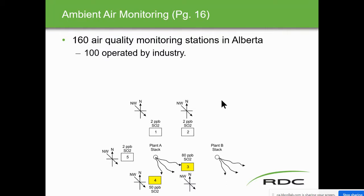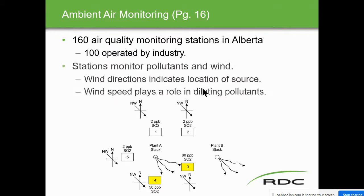100 of those stations are operated by industry, and 60 are monitored by the government. Station monitors measure pollutants and wind. Any of these stations, wherever they're put, monitor the pollutants and the wind. Wind direction indicates location of source. Wind speed plays a role in diluting the pollutants — the higher the winds, the more they get diluted.